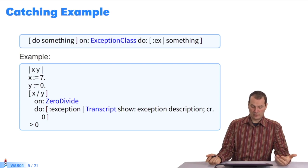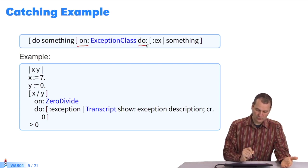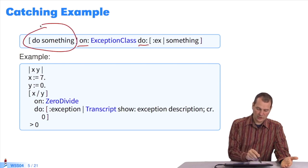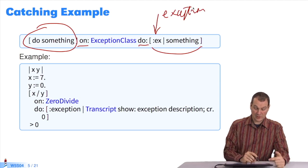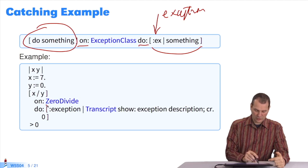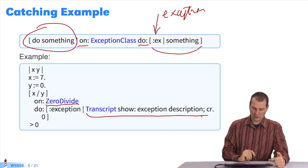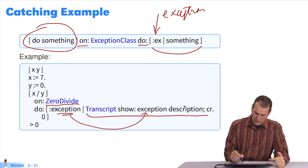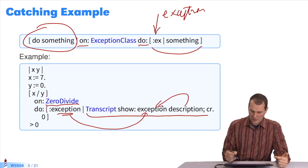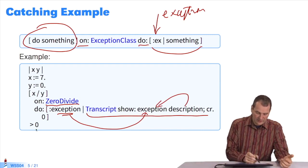Imagine that you wanted to trap an exception — it's the on:do: message. You make a block with an action, and if ever you have an exception, you handle it. For example, with zero division: if I do seven divided by zero, when I have a zero divide, I'll write 'watch out, there's a zero divide'. An instance of the exception class is passed as an argument, and you can question it and send it messages, because exceptions are objects in Pharo.